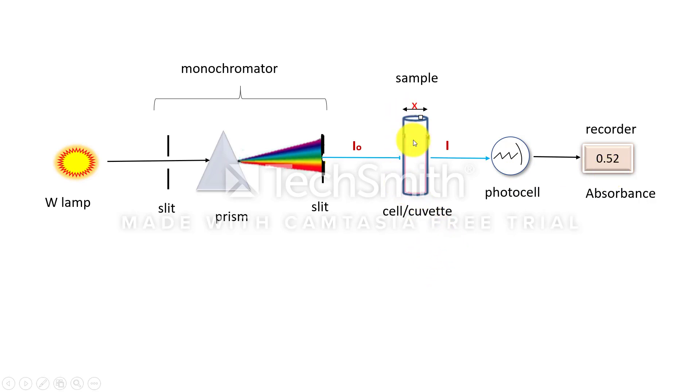Coming to the working of spectrophotometer, first the cuvette is filled with blank or reference solution. If you want to measure the absorbance of the colored substance, the solution is made in water, then the water will be a reference or blank solution. So first blank solution is filled in cuvette and the monochromatic radiation is allowed to pass through it.